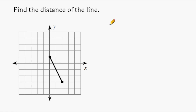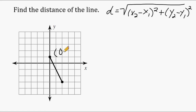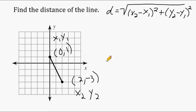Now another way that you can figure out the distance between any two points on the coordinate plane is by using the distance formula. The distance formula is equal to the square root of (x2 minus x1) squared, plus (y2 minus y1) squared. The next thing we have to do is determine the coordinates of each of our points. This point right here is located at (0, 1), and this point is located at (2, negative 3). Because this is our first point, we're going to call this x1 and y1. Because this is our second point, we are going to call this x2 and y2.